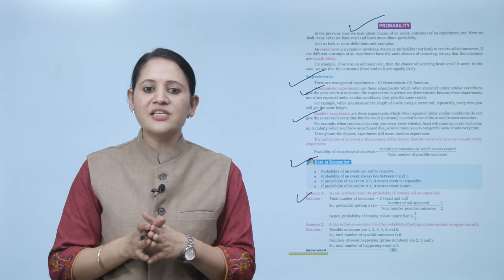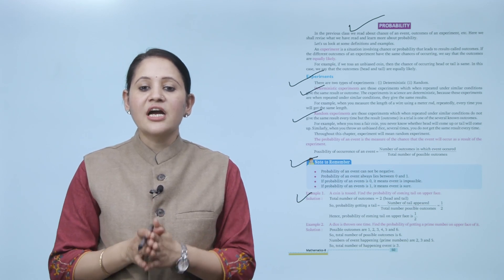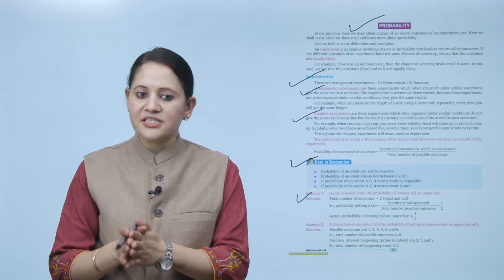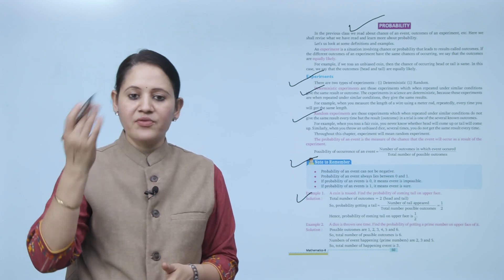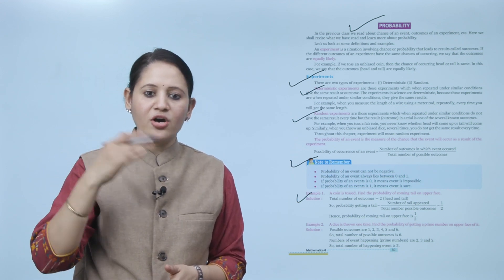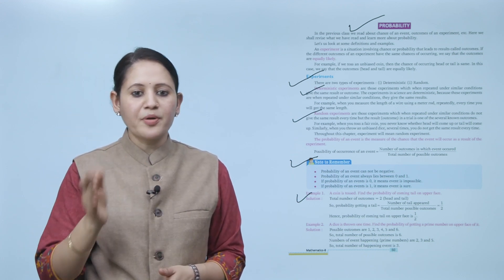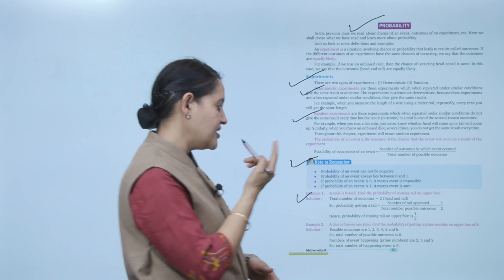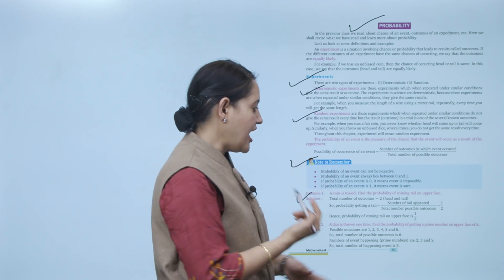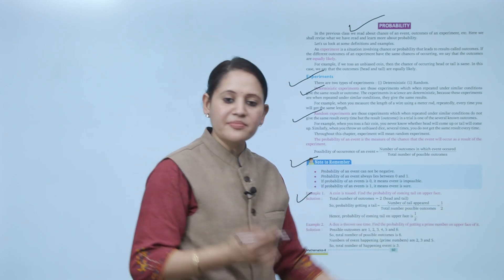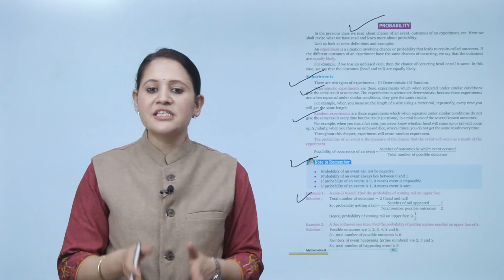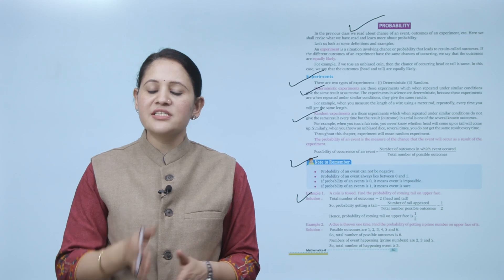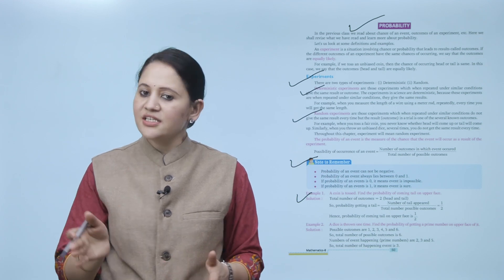Example: a coin is tossed; find the probability of getting tail on the upper face. Total outcomes are head or tail, so total = 2. Favorable outcome (tail) = 1. Therefore, probability of getting tail = 1/2.